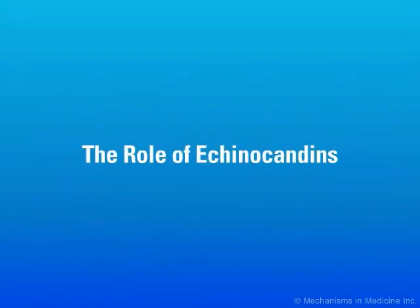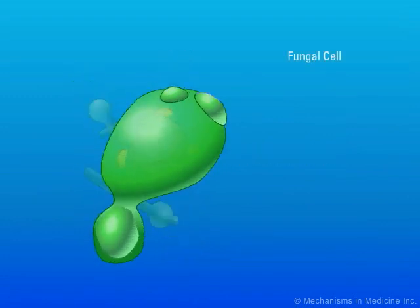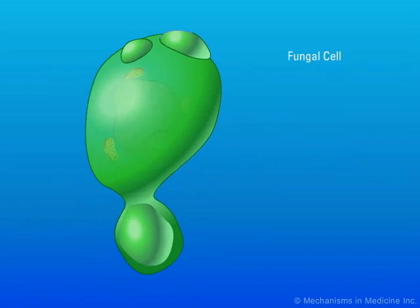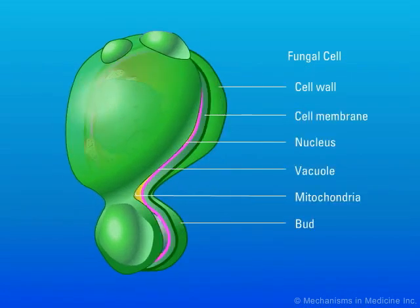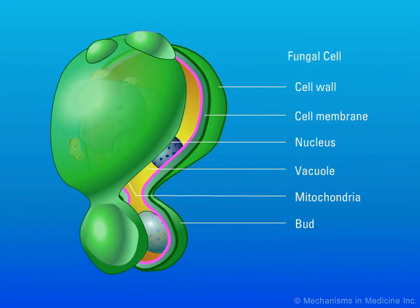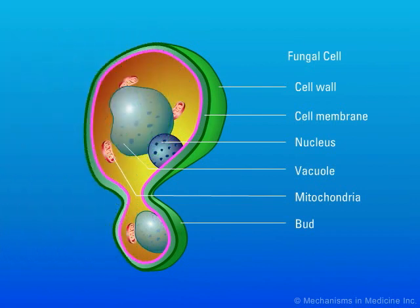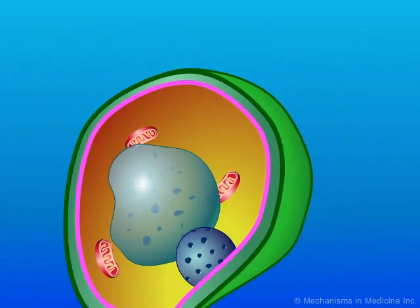The role of echinocandins: Fungi are eukaryotic organisms which possess a unique cell wall and cell membrane that can serve as targets for antifungal agents. The echinocandin class of antifungal agents target the cell wall of fungi. In general, 80-90% of a fungal cell wall consists of polysaccharides.